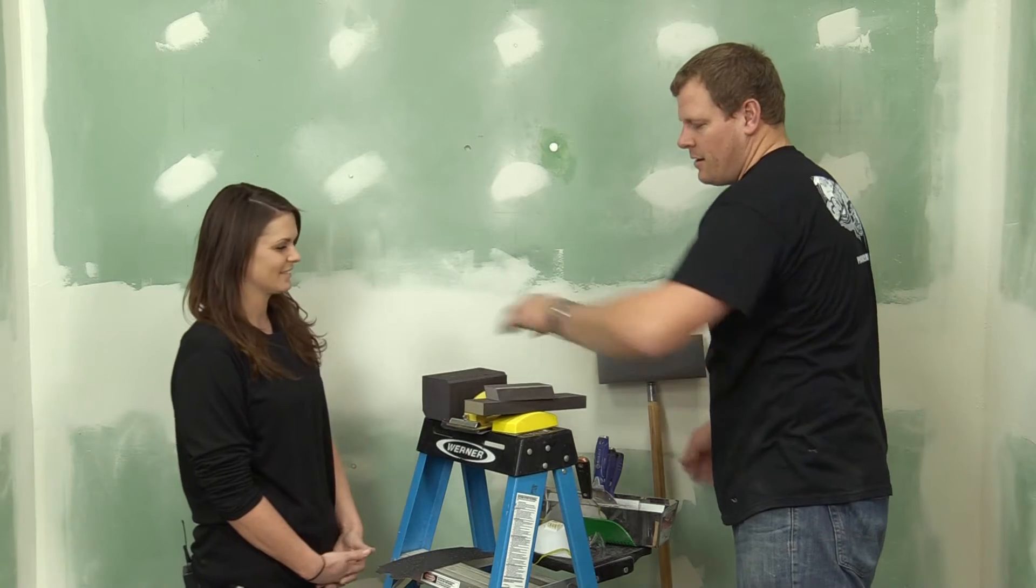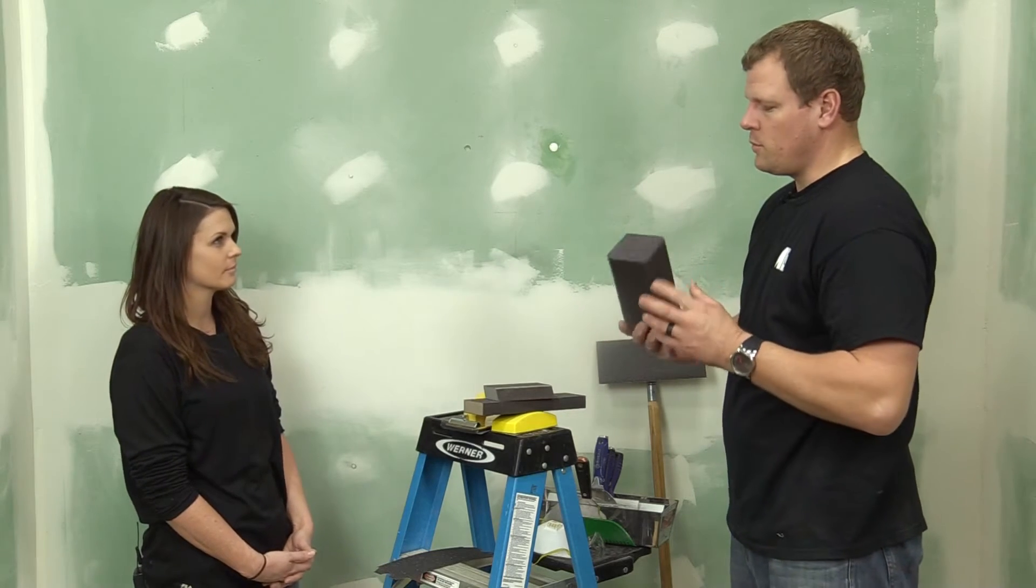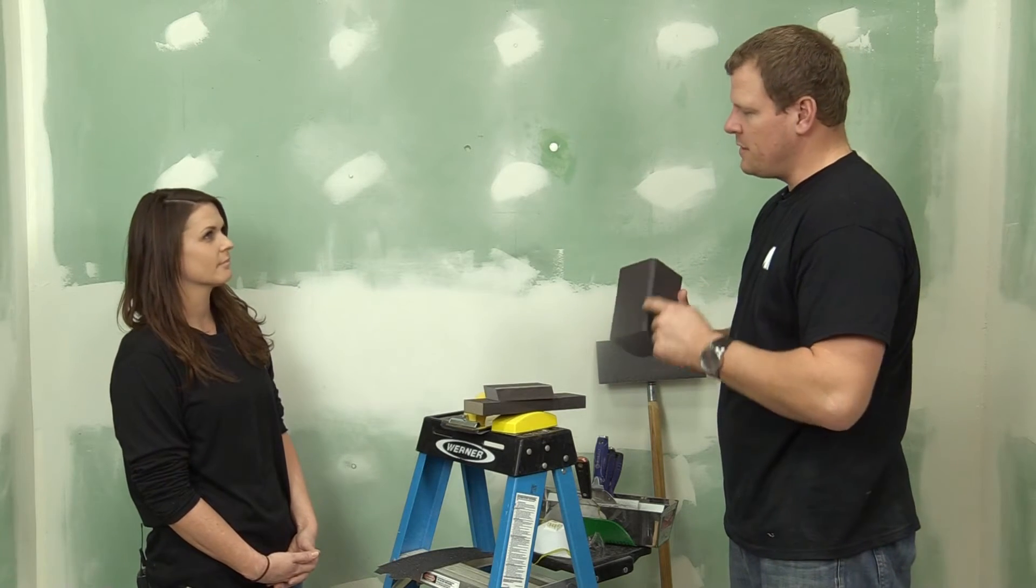The other sanding tools that I like are the big block sander. This is for inside corners—it has an unfinished edge so it doesn't mar both sides of the wall when you're sanding.